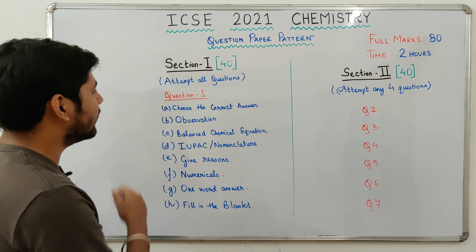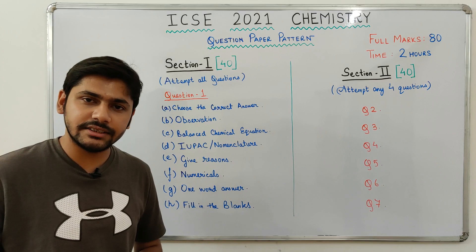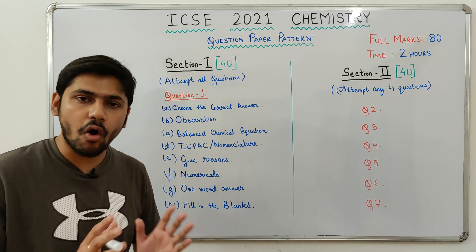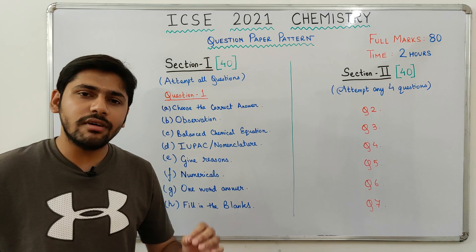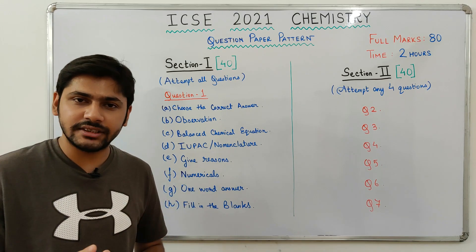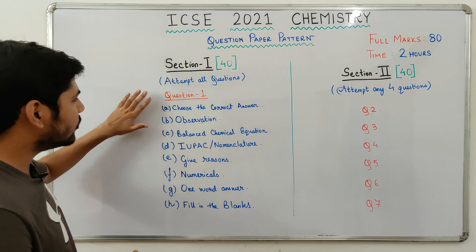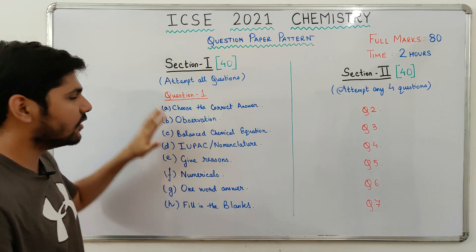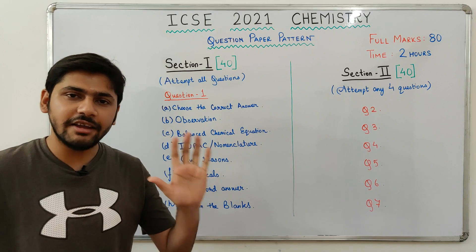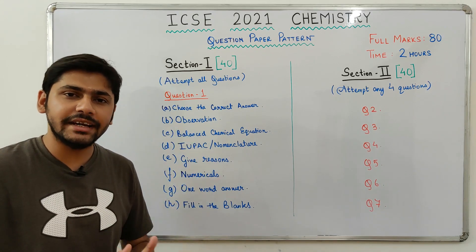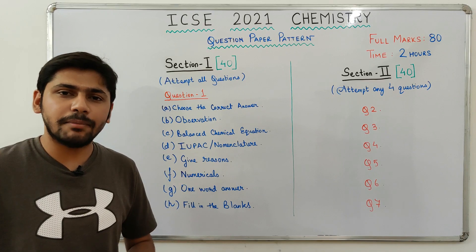Section 1 is worth 40 marks. This is a compulsory section and you will have to attempt all the questions. You will face objective type questions in Section 1. You will get Question 1, which will have 8 sub-parts of 5 marks each, giving you 8 × 5 = 40 marks.